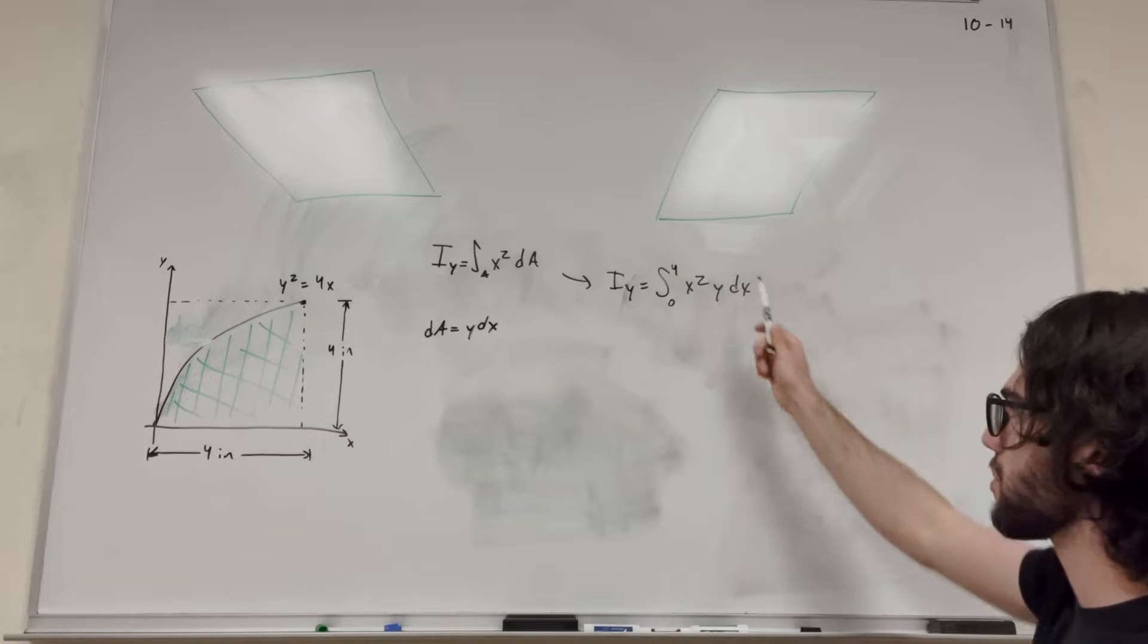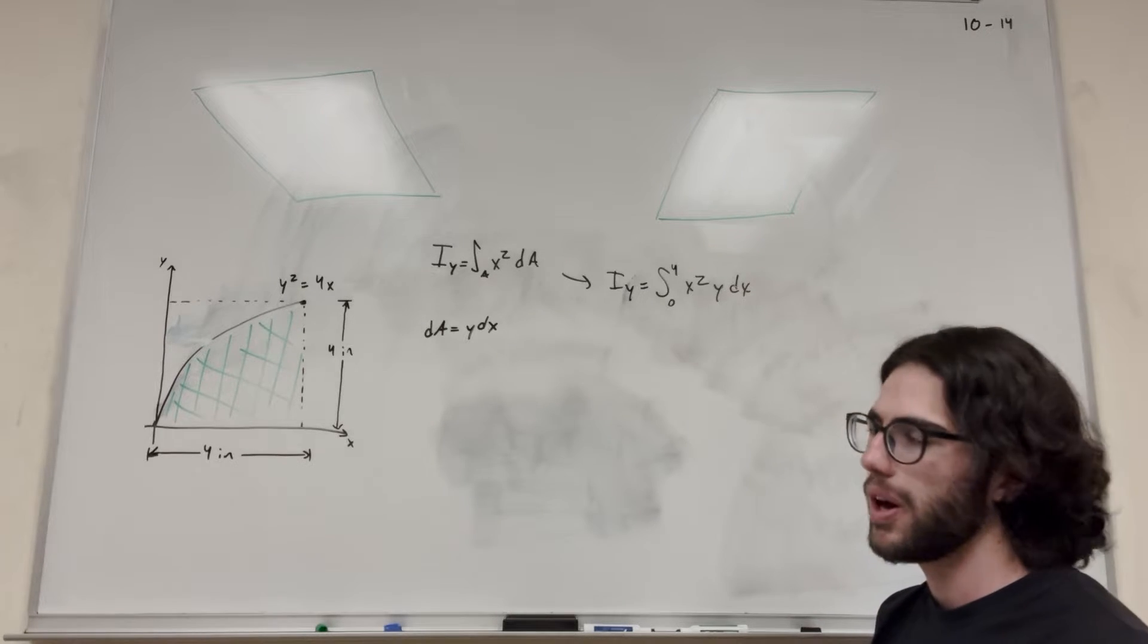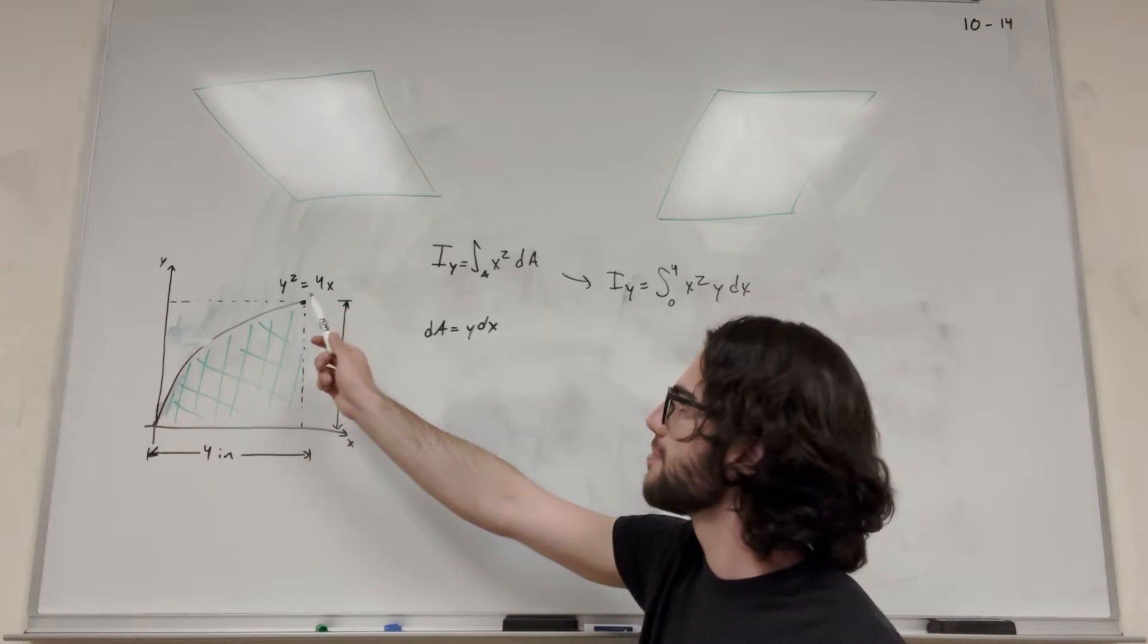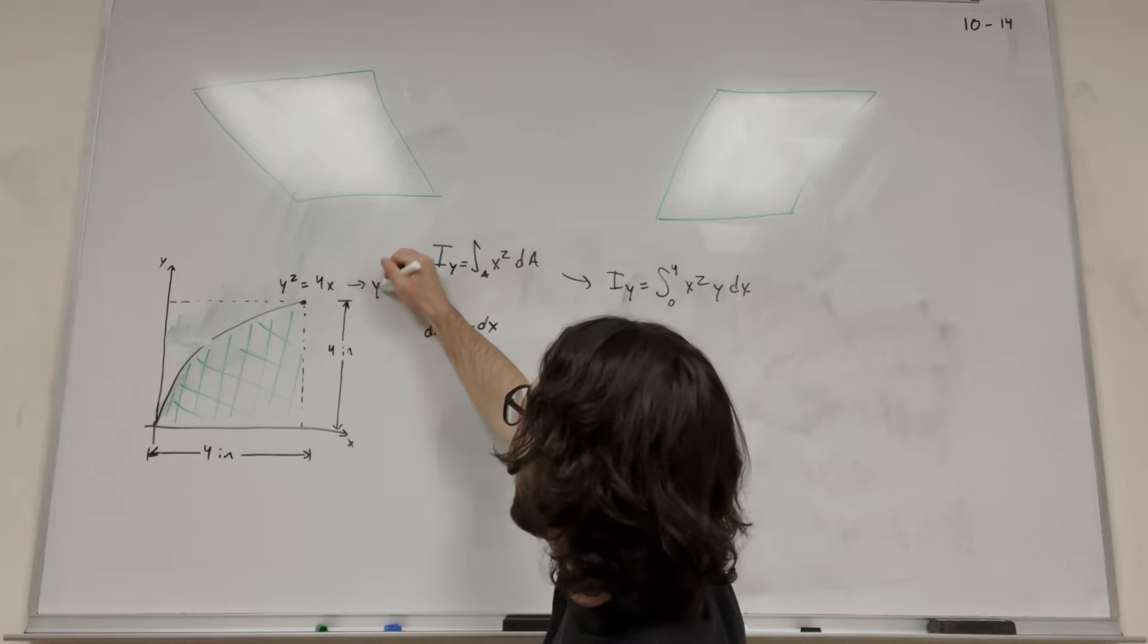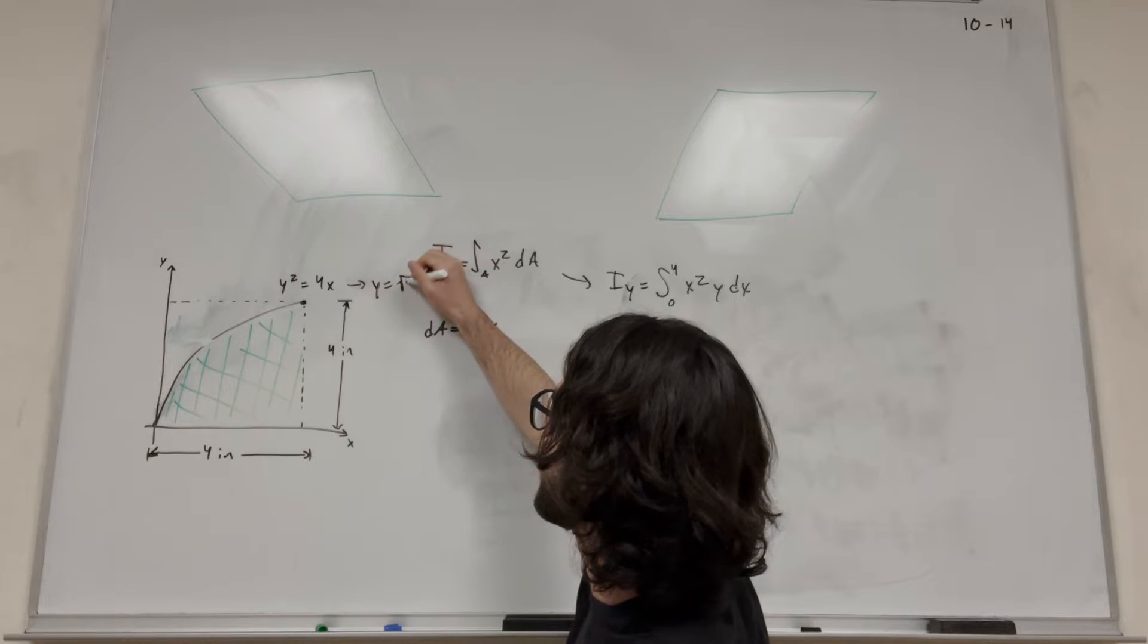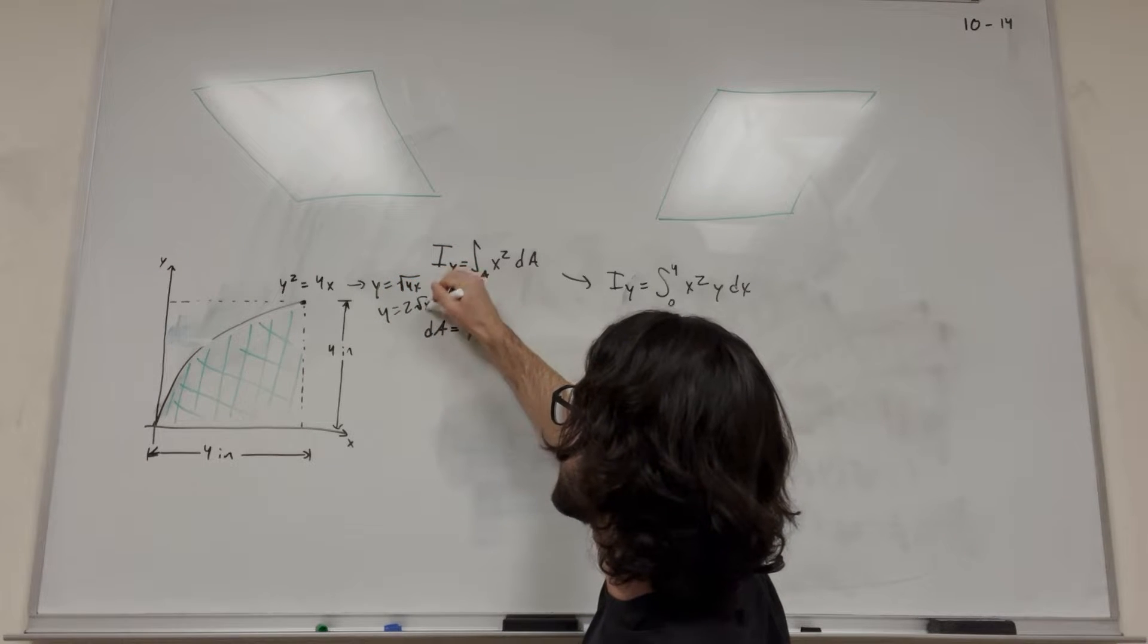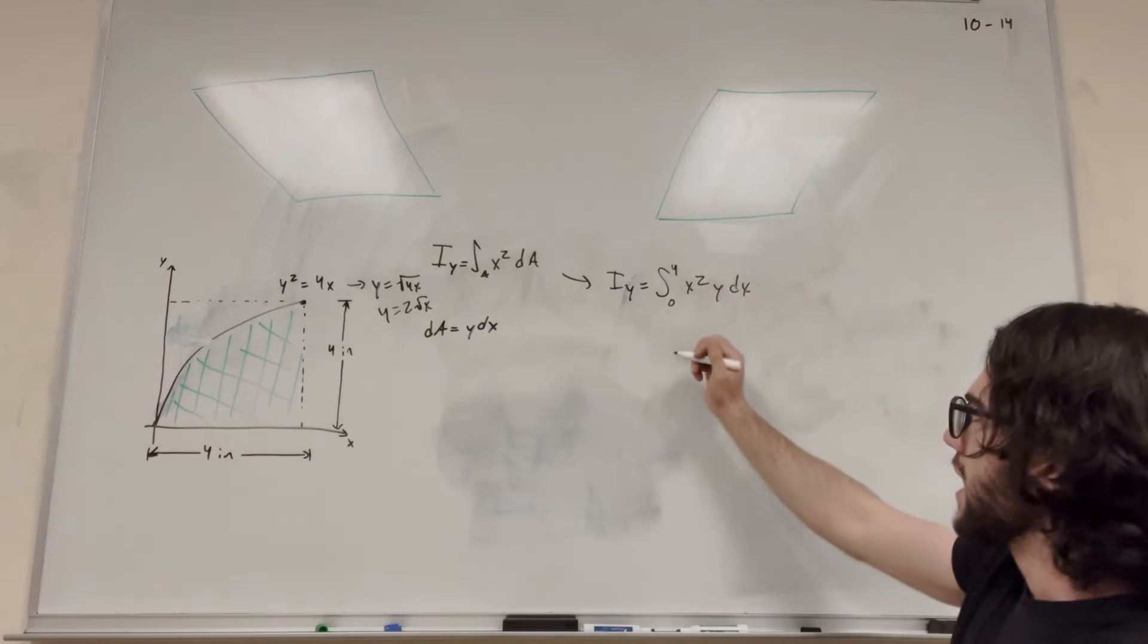We can't solve this integral yet because we have a y in there. So we need to get rid of this y. How are we going to get rid of this y? Well, we're going to plug in what we know here. y squared equals 4x. So if y squared equals 4x, then that implies that y equals square root of 4x, or y equals 2 square root of x, just by bringing out the 4. So let's plug that in.